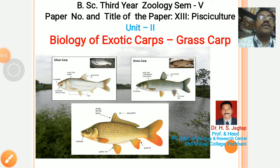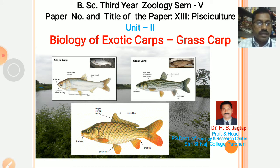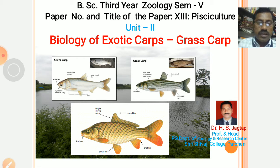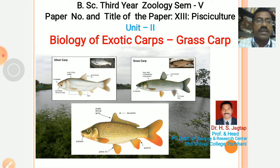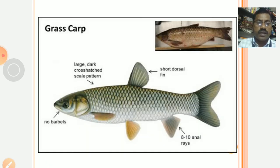Dear friends, today we are going to study one of the important exotic carps, that is the grass carp. As you know, there are three important exotic carps. The first one, the silver carp, you have studied in the last lecture. Now today we are studying the grass carp.